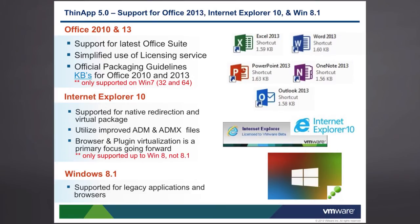As part of the enhancements for ThinApp 5, we saw support for Office 2013, Internet Explorer 10, and Windows 8.1. This means better support for the latest Office suites and simplified licensing service options for Office 2010 and Office 2013. The official packaging guides can be found in the KBs at kb.vmware.com. Note that Office packaging is only supported on Windows 7 at this time for 32 and 64-bit versions. IE10 was supported for native redirection and virtual packaging, with additional ADM and ADMX template files for IE6 ThinDirect. However, IE10 is only supported up to Windows 8, meaning the current Windows 8.1 is not supported with IE10. Windows 8.1 support is available for legacy applications and other browsers.